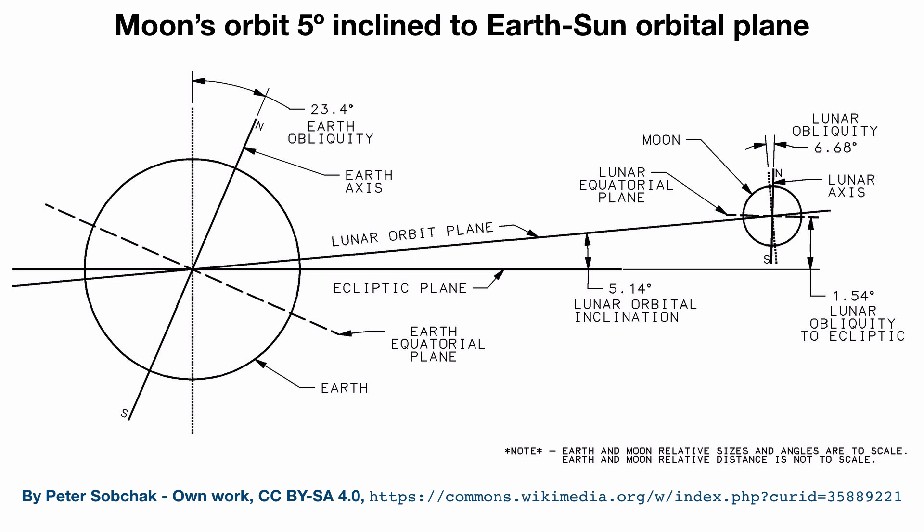The moon is not exactly in the same plane as the sun and the Earth in the globe Earth model — there is a little bit of wiggle room of only five degrees. Sometimes the moon is above the ecliptic plane and sometimes it's below it. So we're going to say plus or minus five degrees is our wiggle room.